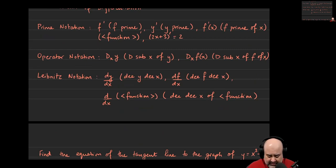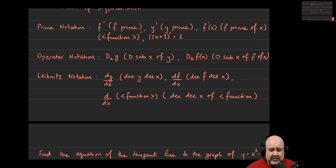Operator notation is less commonly used — it's used more in differential equations. You can use the derivative operator: capital D, and you would read it as D sub x of y, or D sub x of f of x. This means find the derivative of f of x with respect to x, or find the derivative of y with respect to x. This 'with respect to' business will make more sense once we've done implicit derivatives, but for now just know what it means.